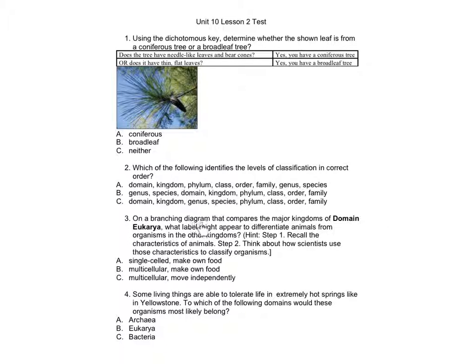Number 3: On a branching diagram that compares the major kingdoms of domain Eukarya, what label might appear to differentiate animals from organisms in other kingdoms? Hint: Step 1, recall the characteristics of animals. Step 2, think about how scientists use those characteristics to classify organisms. A: single-celled, make own food. B: multicellular, make own food. C: multicellular, move independently.